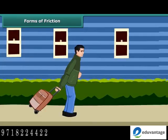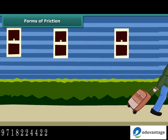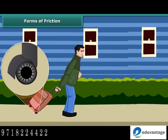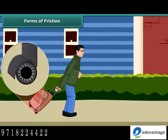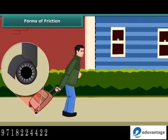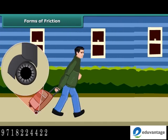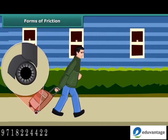You must have seen suitcases and other pieces of luggage fitted with rollers — even a child can pull such pieces of luggage. The rollers reduce friction and allow objects to roll over surfaces. It is always easier to roll than to slide a body over another. That is the reason it is convenient to pull luggage fitted with rollers.